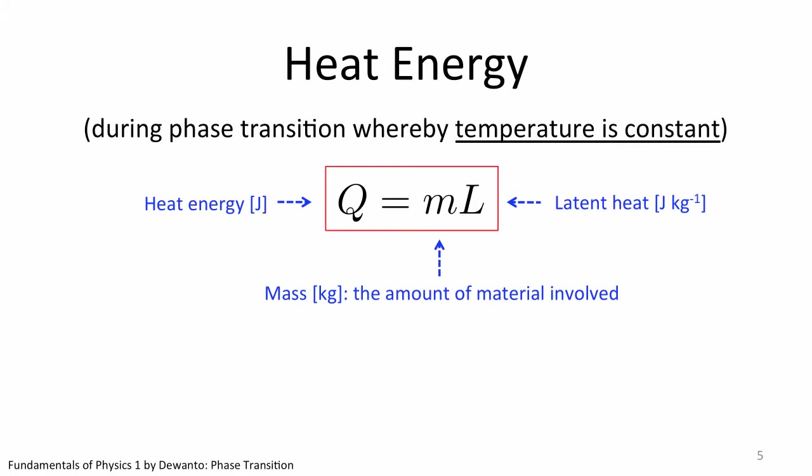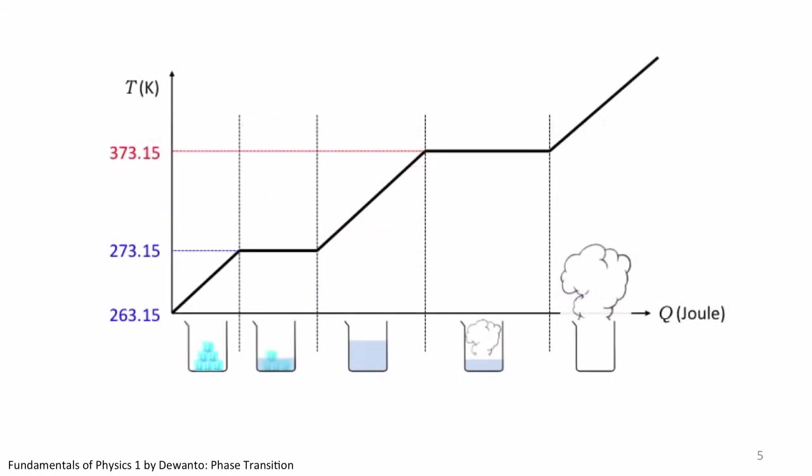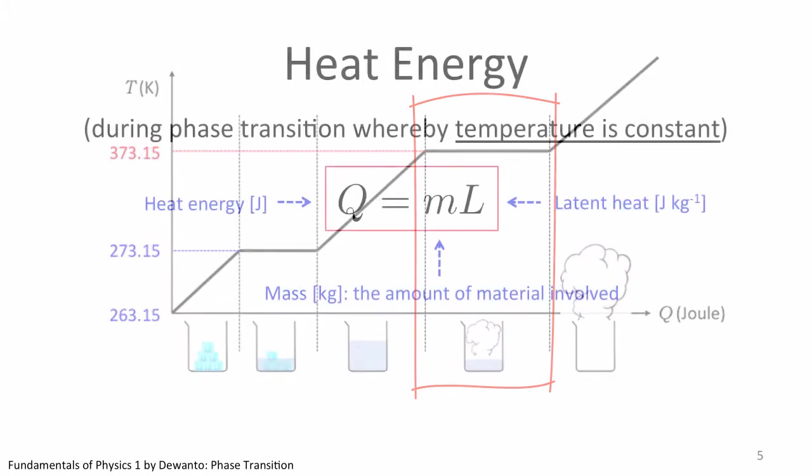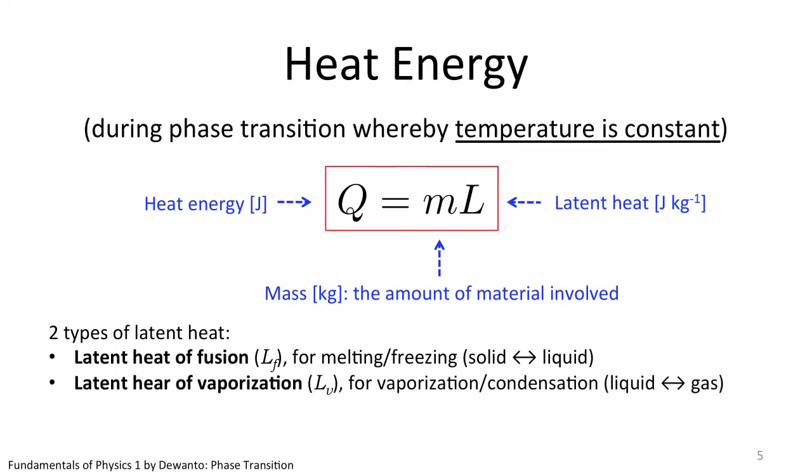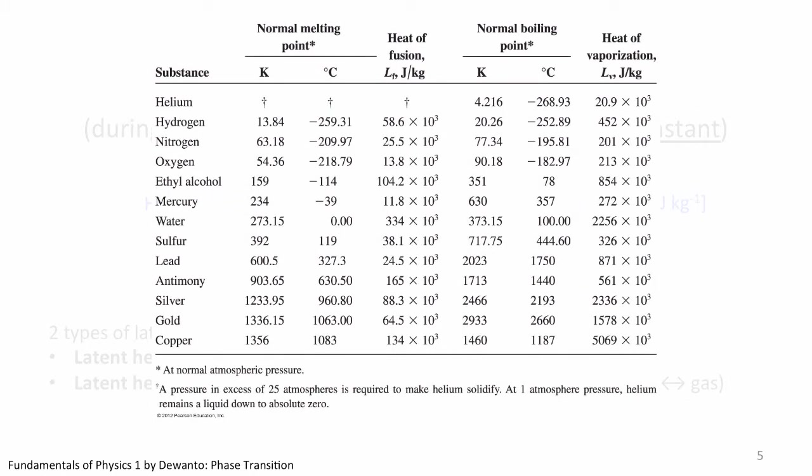Now there are two stages whereby an object undergoes phase change without change in temperature. Those are melting or freezing states and evaporation or condensation states. So naturally there are two types of latent heat. Namely latent heat of fusion which refers to, if we are talking about H2O, the amount of heat required to melt per kilogram ice into water or heat extracted to freeze per kilogram water into ice. And the latent heat of vaporization which refers to the amount of heat required to evaporate per kilogram water into steam or heat extracted to condensate per kilogram steam into water.